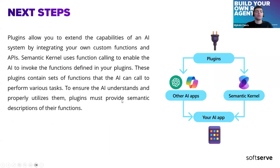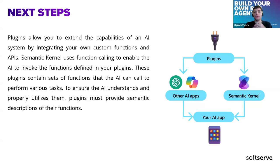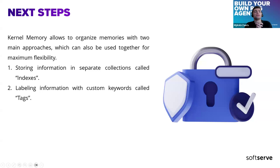For next steps, I'd like to share a bit about plugins that Semantic Kernel provides. Plugins allow you to extend the capabilities of an AI system by integrating your own custom functions and APIs. Semantic Kernel uses function calling to enable the AI to invoke functions defined in your plugins. These plugins can contain a set of functions or API calls and perform various tasks. To achieve this, you just need to ensure the AI understands and properly utilizes them, so plugins must provide a semantic description of their functions.